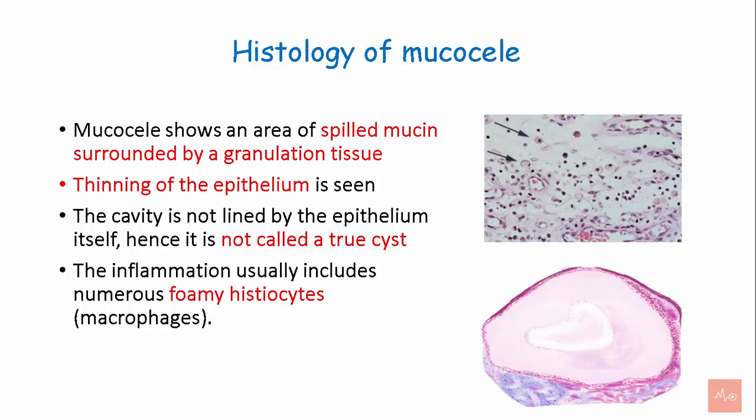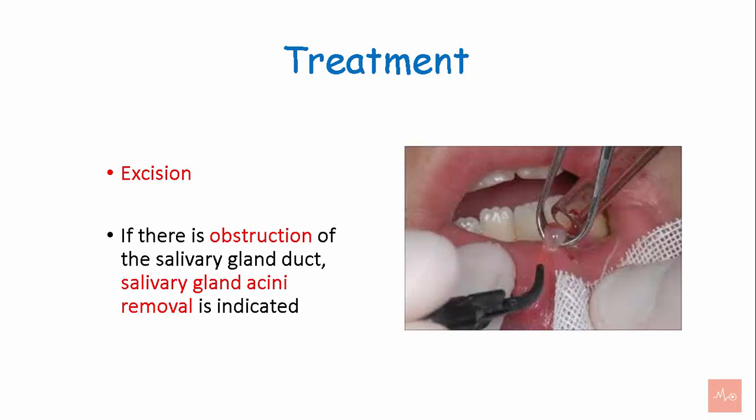The treatment of a mucocele is excision. If there is obstruction of the salivary gland duct, removal of the salivary gland acini is indicated.